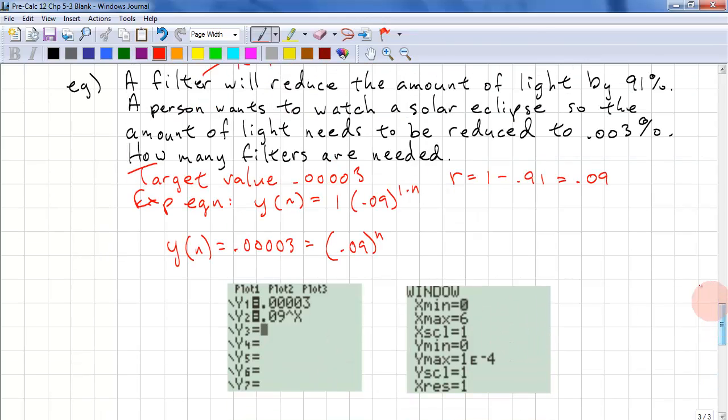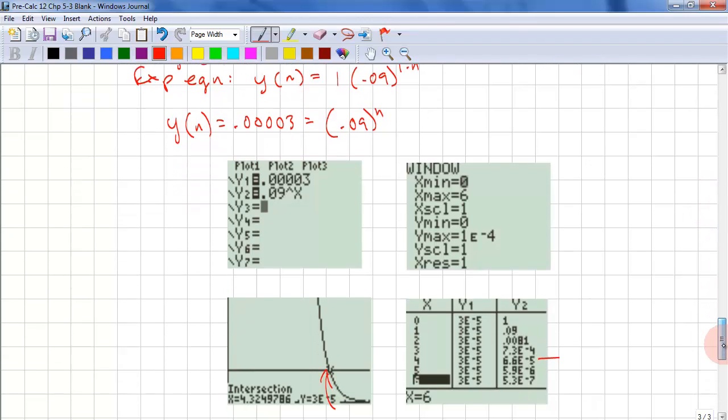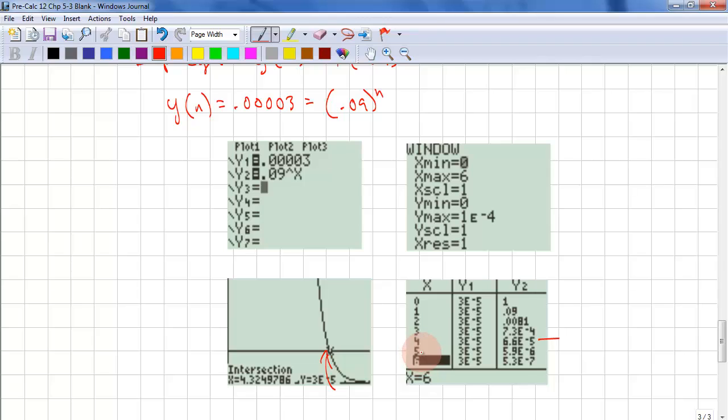Which is too much light being let through. Means you could still have the possibility of going blind. Because you're getting more than double the amount of light that you should be. And that's why we round up in this case to 5 filters. And now we get 0.0000059. That means the light has been reduced enough that you won't go blind. So, 4.3 shouldn't be rounded off to 4. It needs to be rounded up to 5.